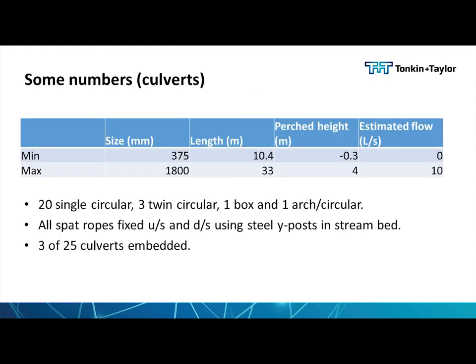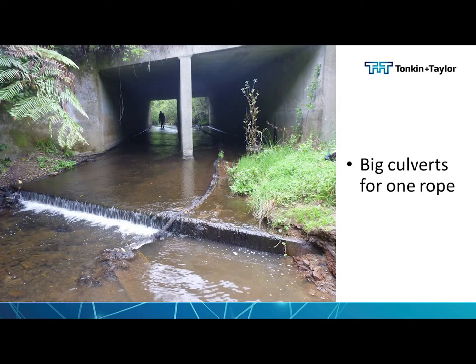In terms of some numbers, culverts vary from 400mm to 800mm in size. There were about 20 single circular culverts, a few twins, one box, and one culvert that started as an arch and ended as a circular culvert. All of the installations were fixed using warathas at both upstream and downstream ends, and only three out of those 25 were embedded in the stream, which is sort of current practice.